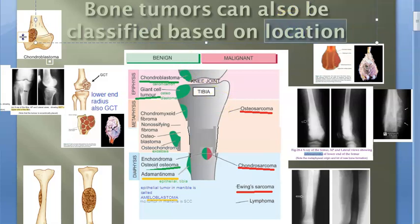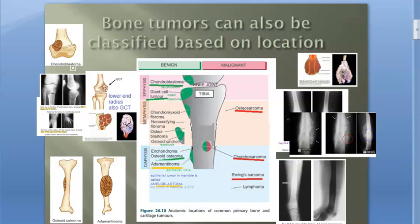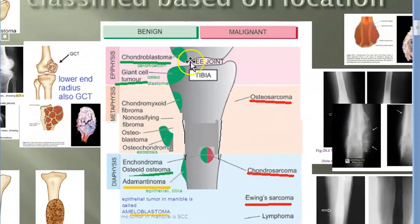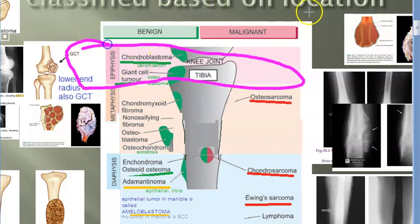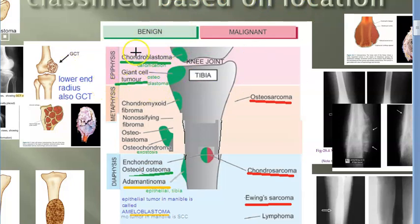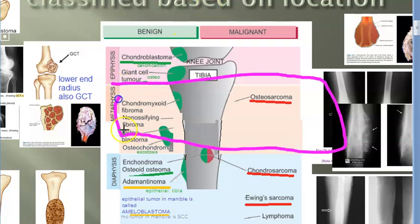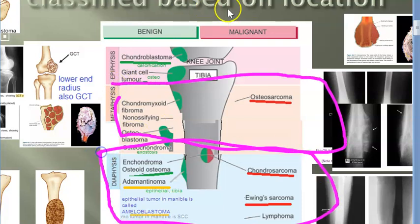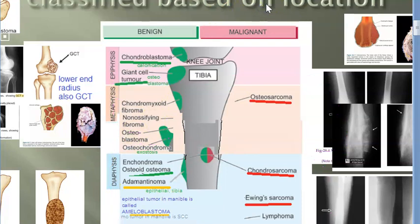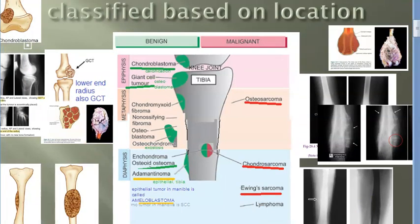Here they have shown the knee joint as an example. You can see the epiphyseal tumors, then the metaphyseal tumors, and below in blue the diaphyseal tumors. You need to know these names and where exactly they occur — location is very important.